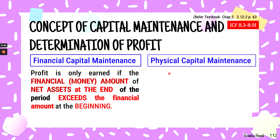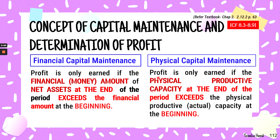Under the second concept, physical capital maintenance, profit is only earned if the physical productive capacity based on output at the end of the period exceeds the actual capacity at the beginning — meaning what you produce at the end should be more than at the beginning.